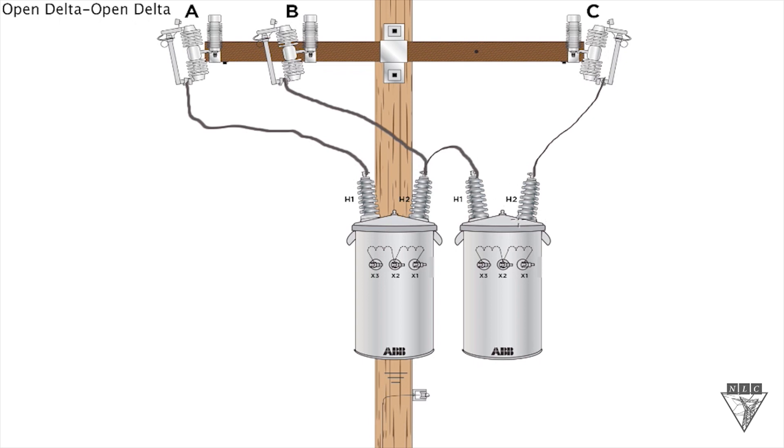And on the other transformer on the right here, we're utilizing C phase and B phase again. So it's a phase to phase connection there. That's the primary connection on an open delta, open delta.